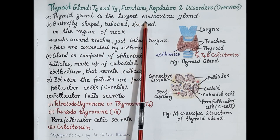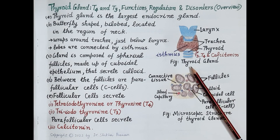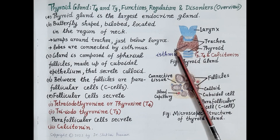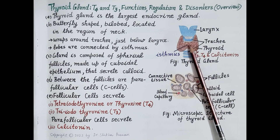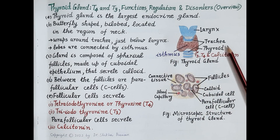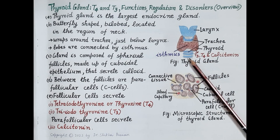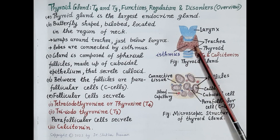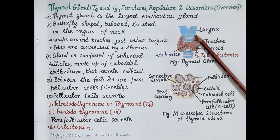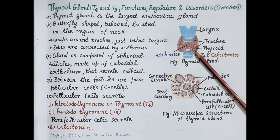The thyroid gland is the largest endocrine gland in the human body. Look at this figure — it shows the location and structure of the thyroid gland. The thyroid gland is butterfly-shaped and consists of two lobes connected to each other by a central tissue called the isthmus. The thyroid gland is located in the neck region, wrapping or covering the trachea (windpipe) from both sides, and is present just below the larynx (voice box).